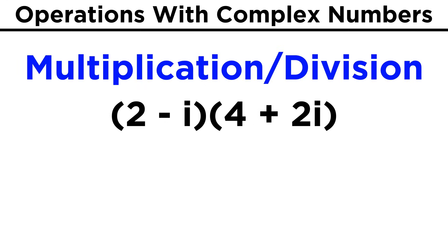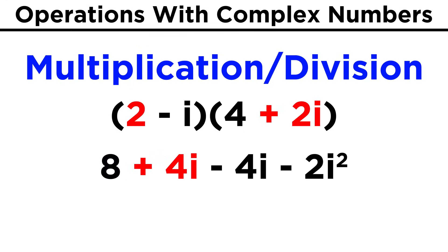Multiplication and division work the same way, with just one extra twist. We have to remember that i squared equals negative one. So let's say we have the quantity two minus i times the quantity four plus two i. We can just FOIL this exactly the way we would with two binomials. First gives eight, outer gives four i, inner gives negative four i, and last gives negative two i squared.